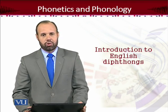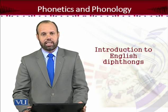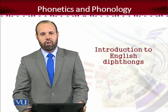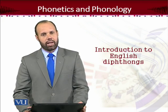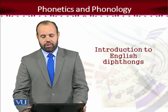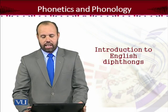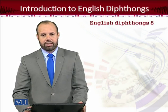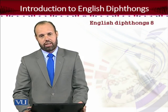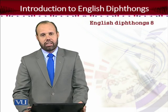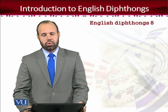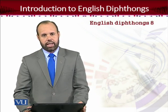Diphthongs are also called glides because there is movement — movement from one vowel to another in a diphthong. English RP accent has eight diphthongs, and diphthongs are divided into two major categories.